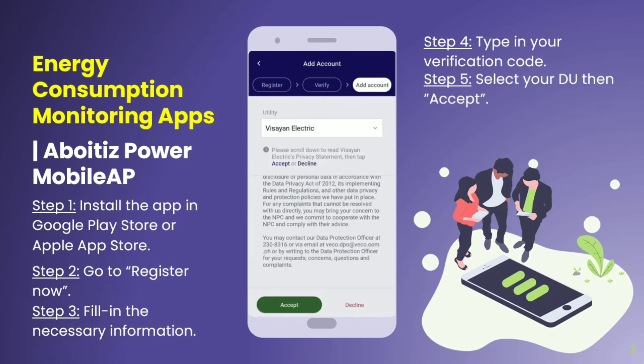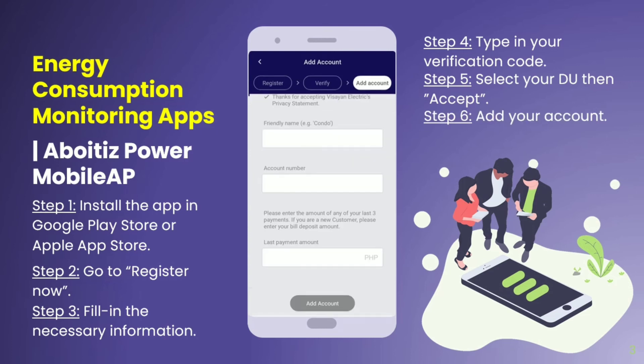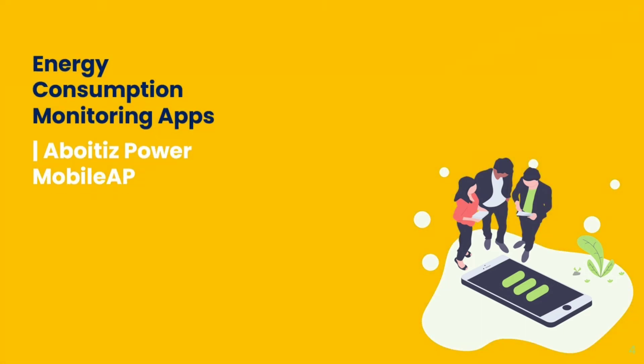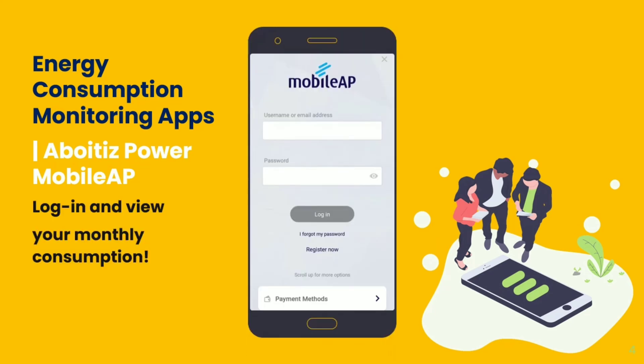Step 5: Select your distributing utility — for example, VECO, CLPC, DLPC, or other Abuites subsidiaries. Step 6: Type in your account number, which can be found in your electric bill. Once all is set, you may now log in with your username and password.